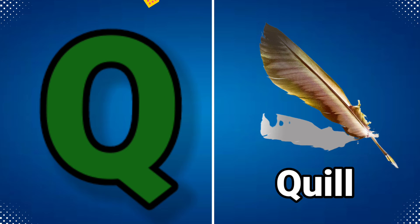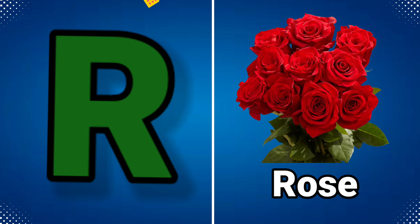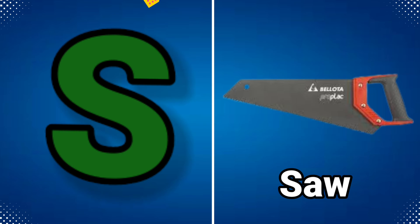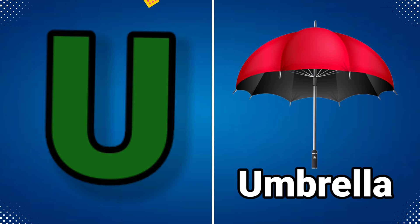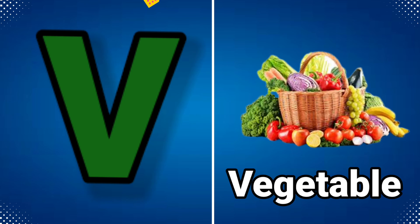Q for quill, R for rose, S for saw, T for table, U for umbrella, V for vegetable.